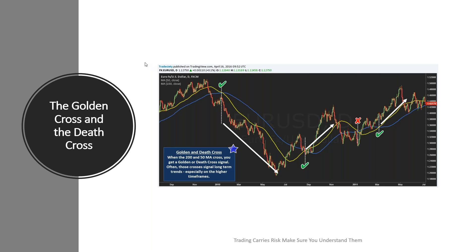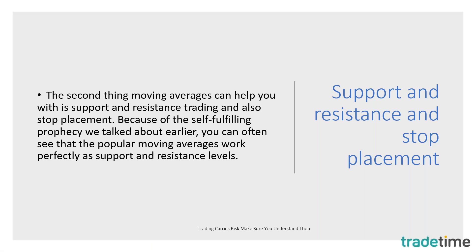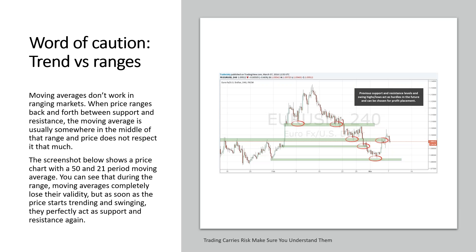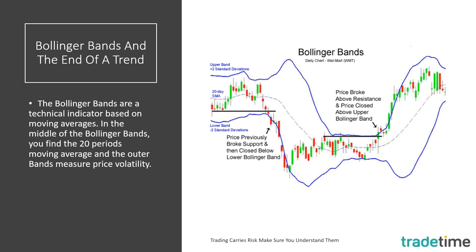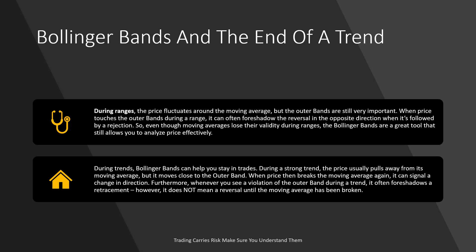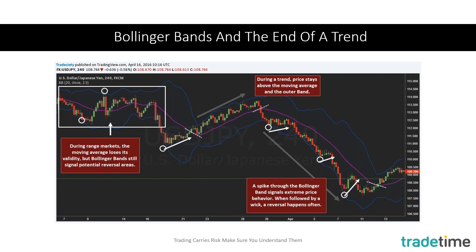I don't use the Golden Cross and Death Cross myself because I trade in too short a period to use a 200-period moving average. Remember: when markets are in ranges, moving averages don't work that great. When price ranges back and forth between support and resistance, the moving average is usually somewhere in the middle and price does not respect it much. Bollinger Bands is a nice indicator developed using moving averages; MACD — moving average convergence and divergence — also uses several different moving averages. Bollinger Bands uses a moving average crossover, giving buy and sell signals when price moves above and below the moving average within the band.